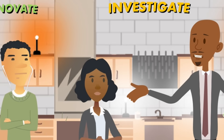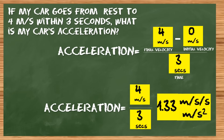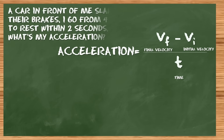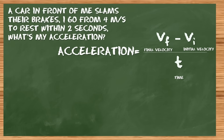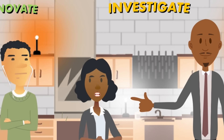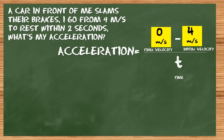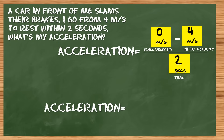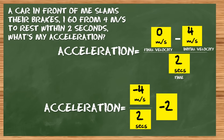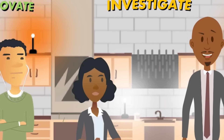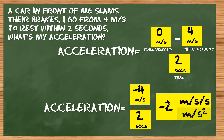We write the unit for acceleration as meters per second per second, or better yet, meters per second squared. Let's try another: a car in front of me slams on their brakes and I go from 4 meters per second to rest within 2 seconds. What's my acceleration? You started at 4 meters per second and ended at 0 within 2 seconds. 0 minus 4 is negative 4; negative 4 divided by 2 gives you negative 2 meters per second squared. Negative acceleration denotes slowing down — your velocity decreased by 2 meters per second every second.